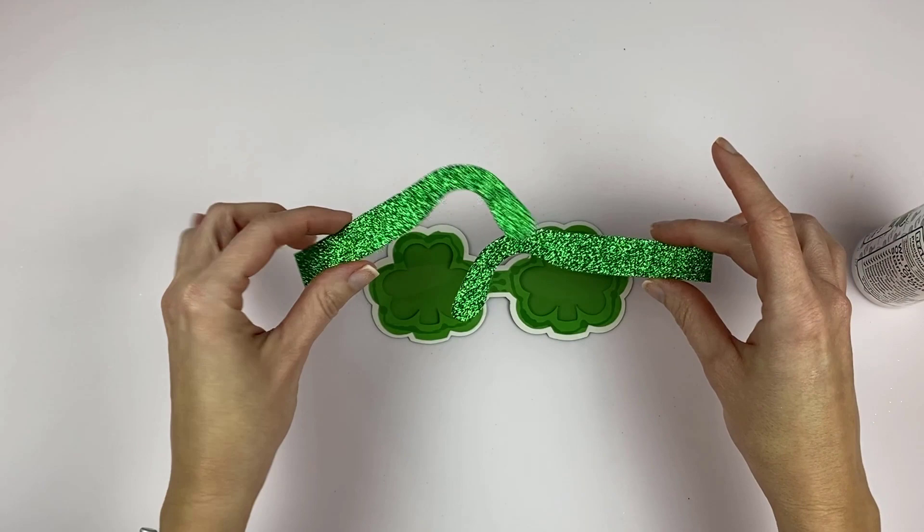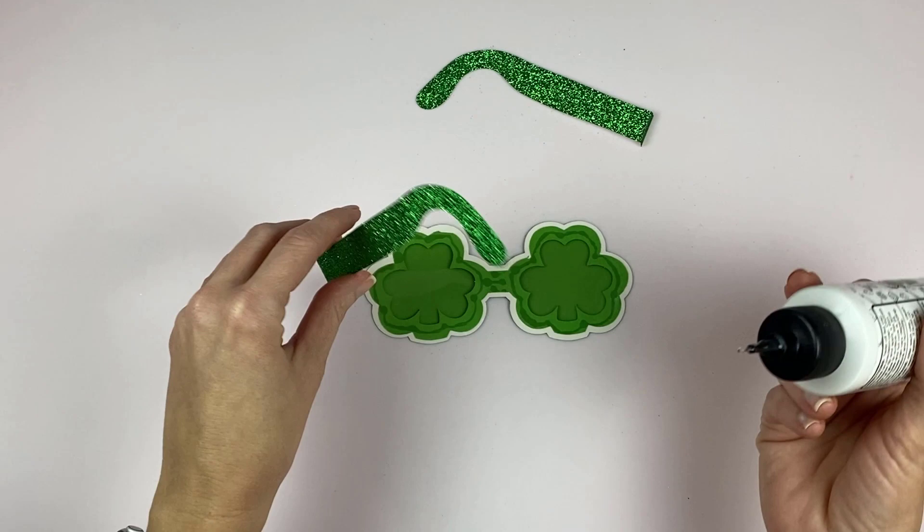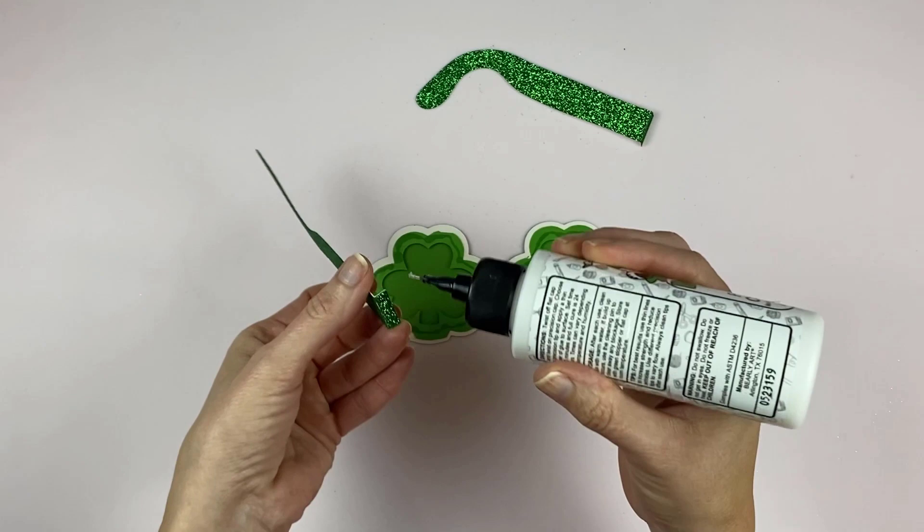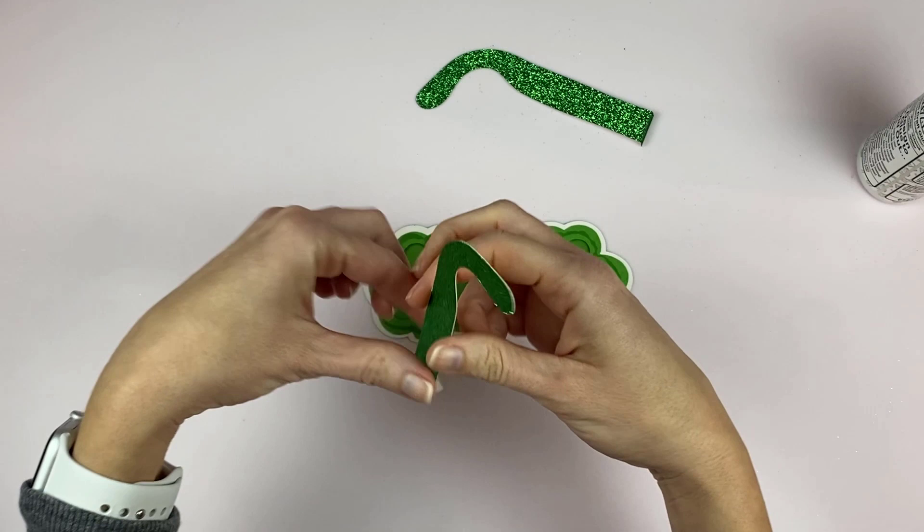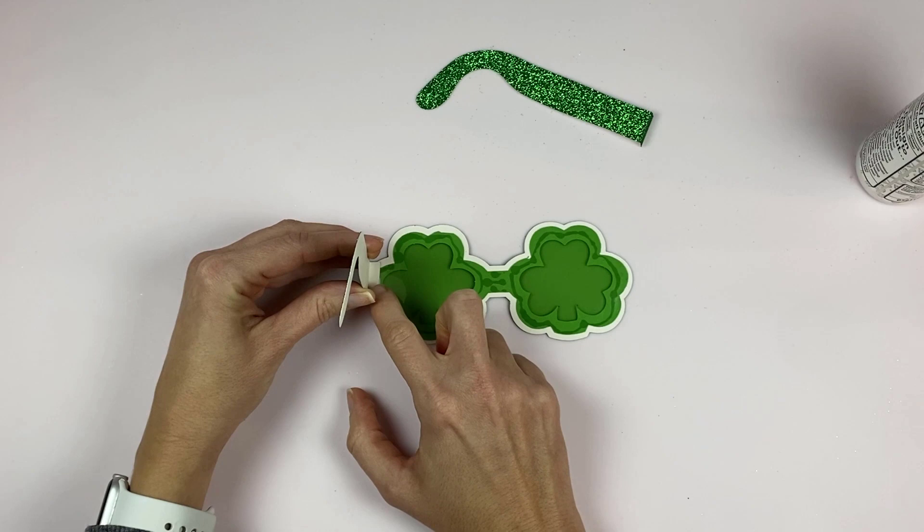And then next we will just take the ear pieces and glue those on. Just make sure you're gluing them on the right way so that this hook is down so it goes over the ear. And I use Barely Art glue and it does work great on glitter. You just need to use a little bit more and you just have to let it dry a little bit longer than you would on normal cardstock.